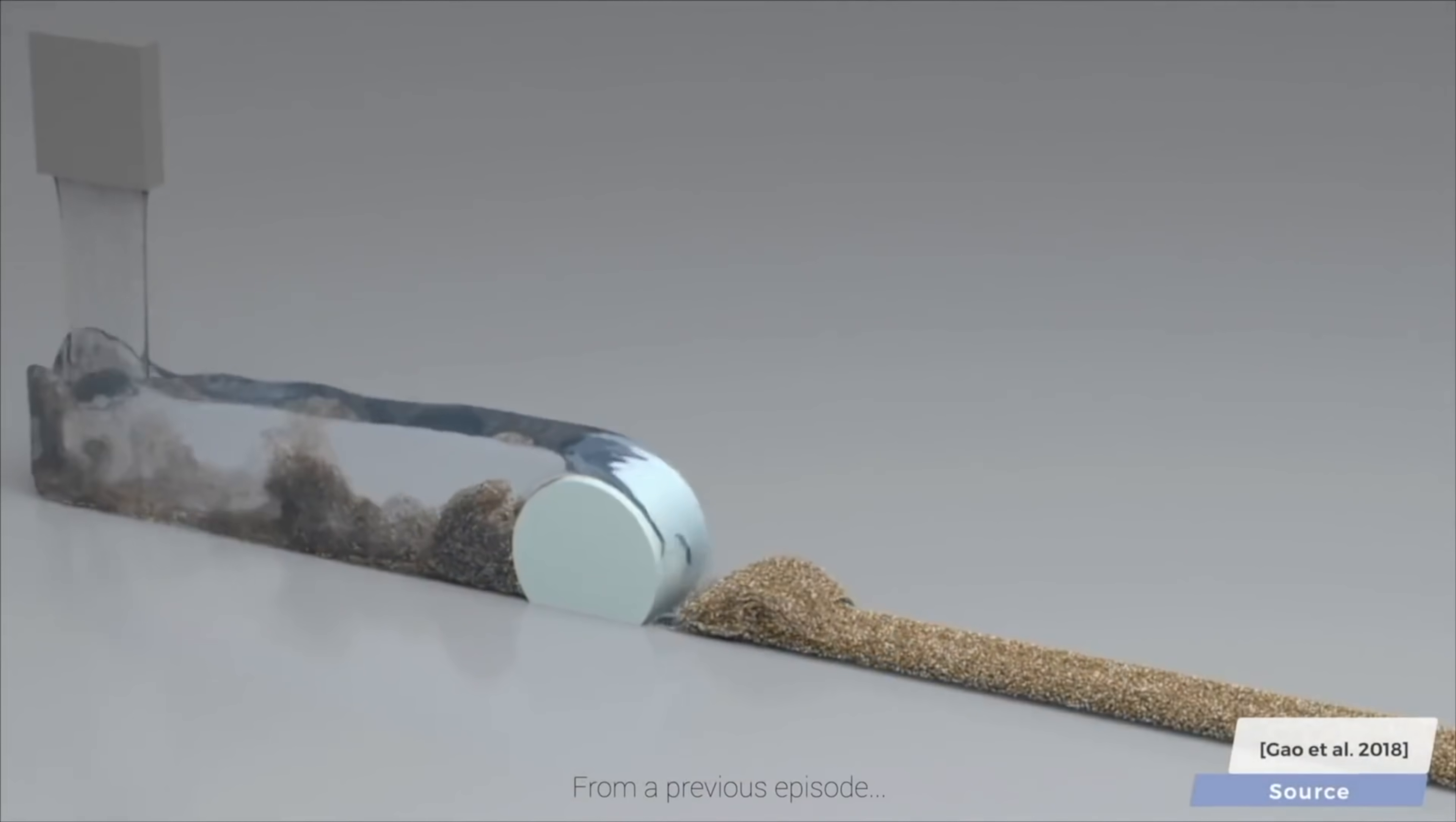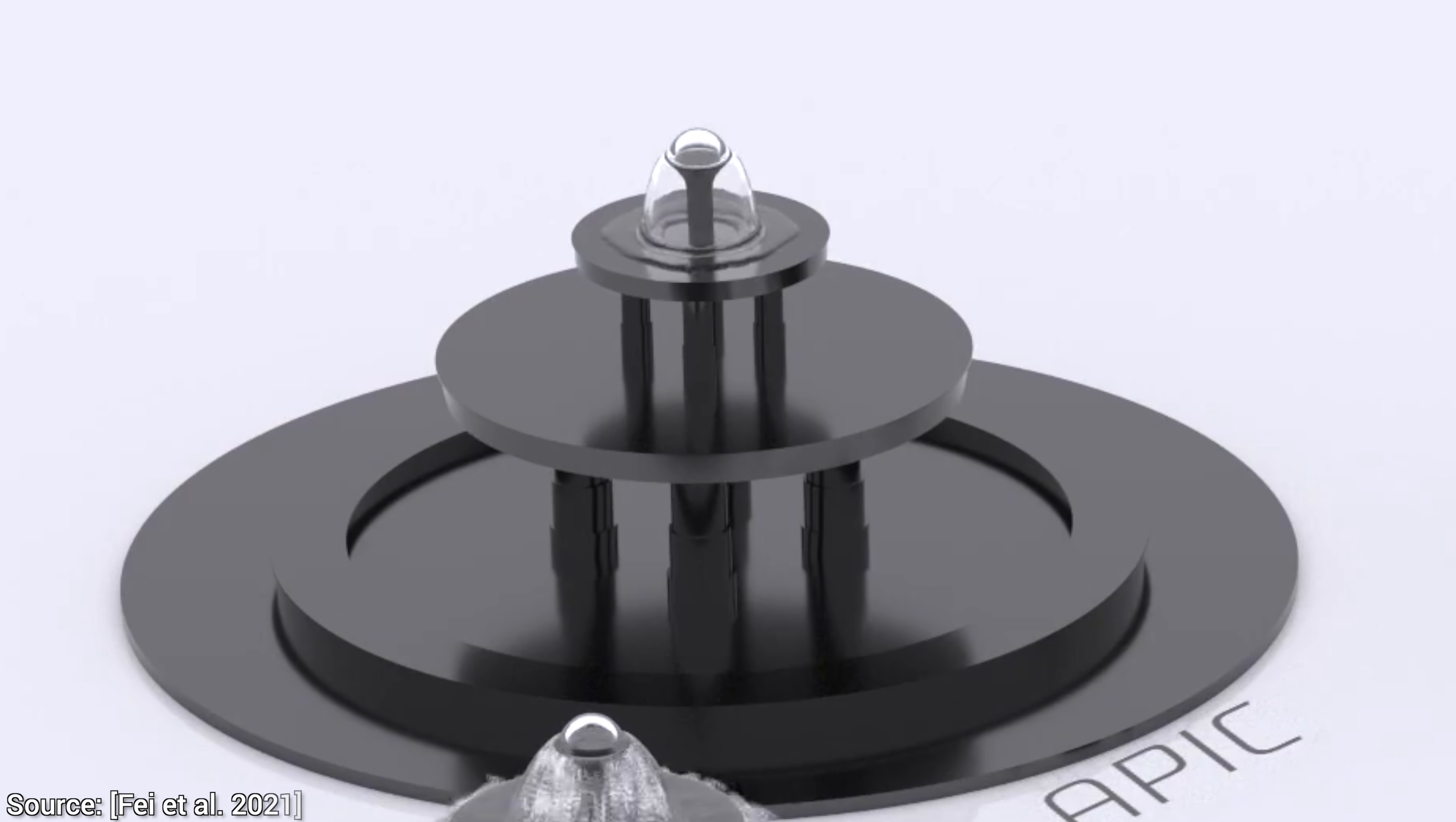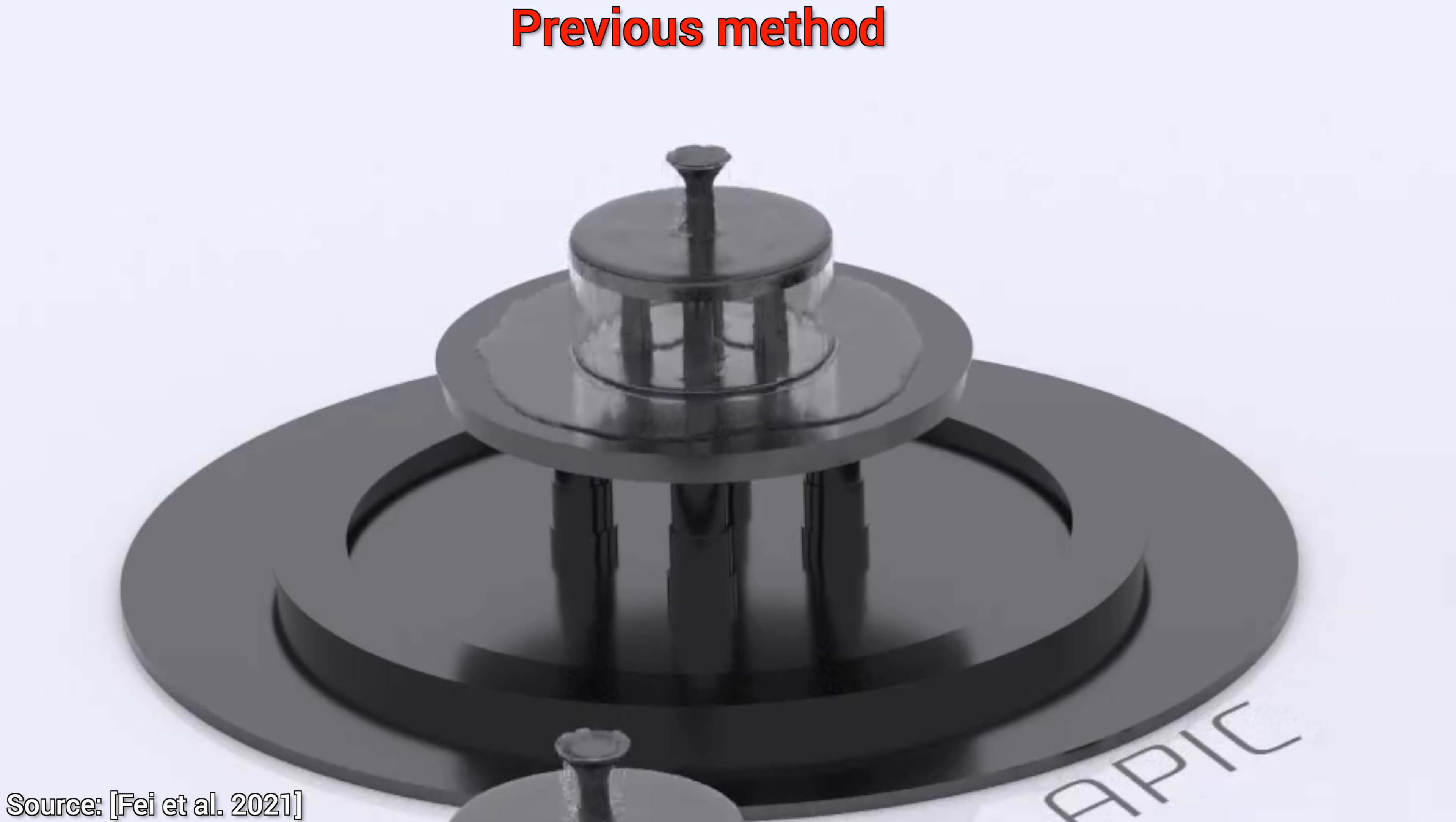Alright, well, what do those limitations look like? Let's have a look at this example. The water is coming out of the nozzle, and it behaves unnaturally. But that's only the smaller problem, there is an even bigger one. What is that problem?